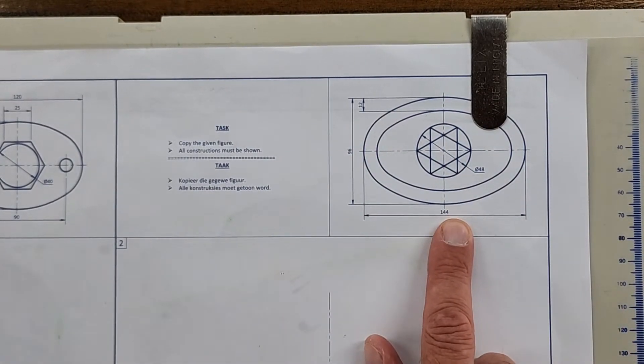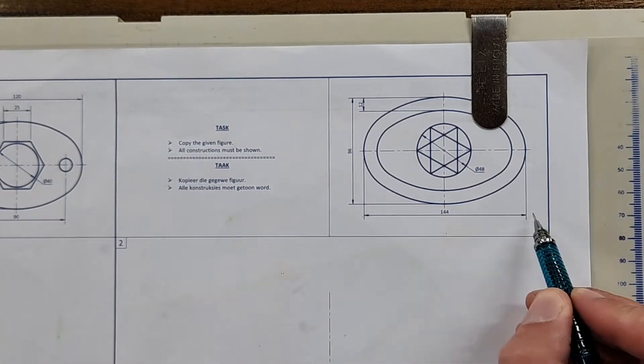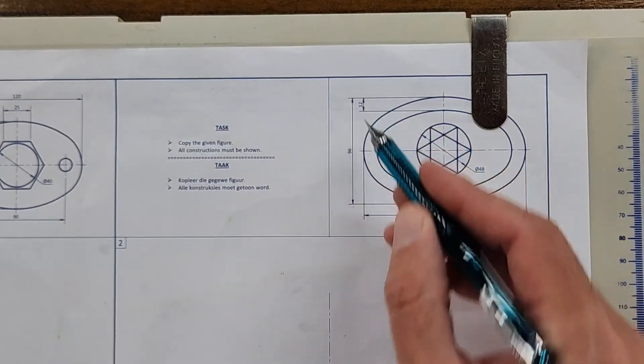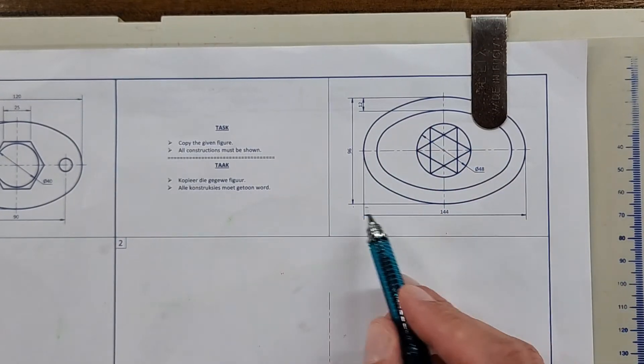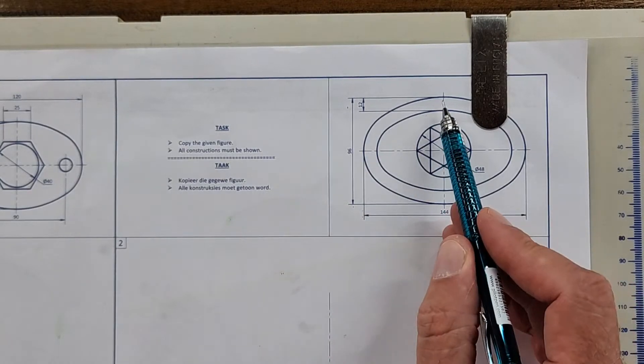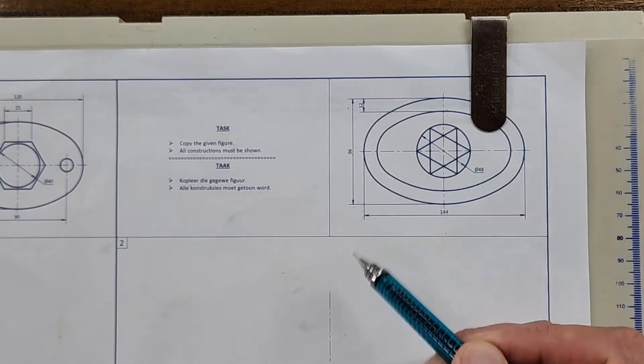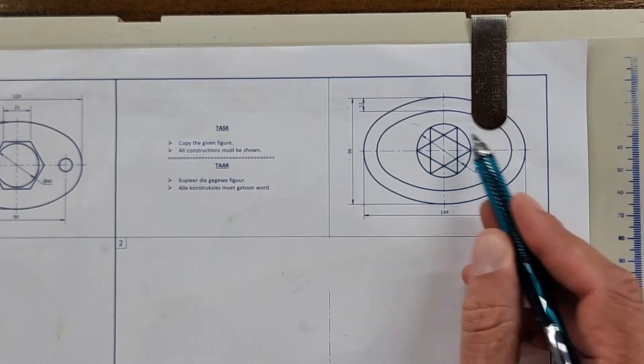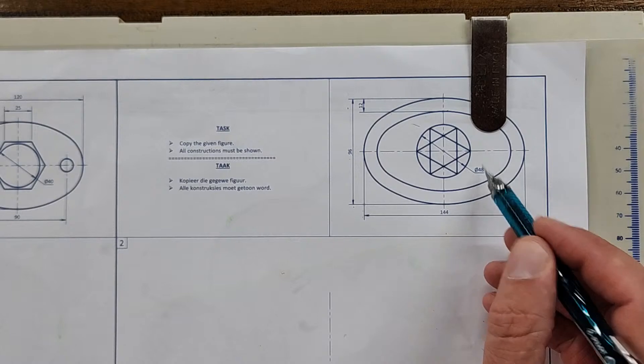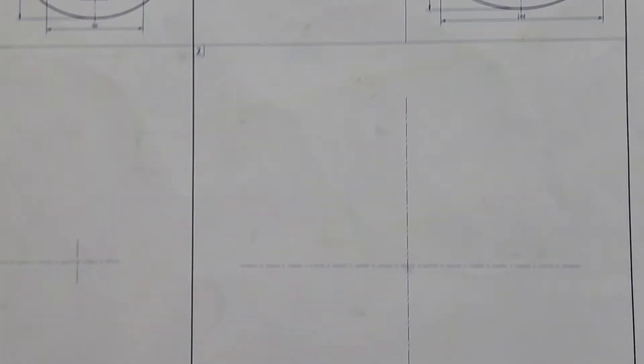What is given to you is this image on the top right with various measurements: a major axis of 144, minor axis of 96. Then there's a banner ellipse, and on the inside we have a hexagon star with diameter 48.